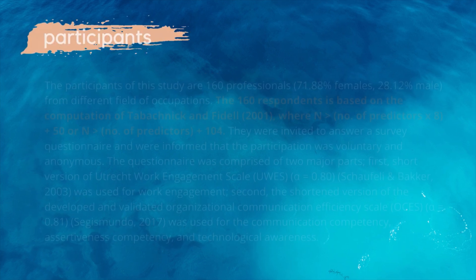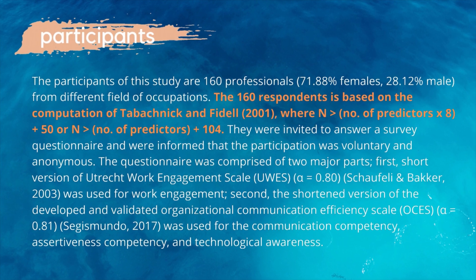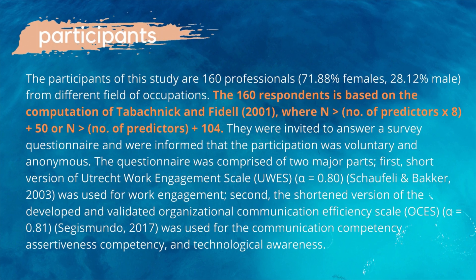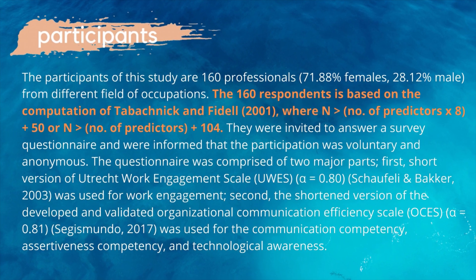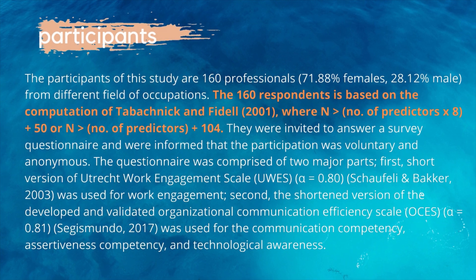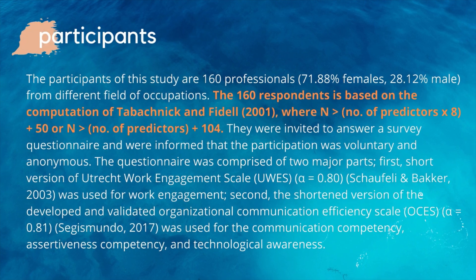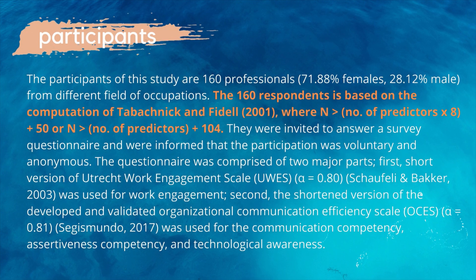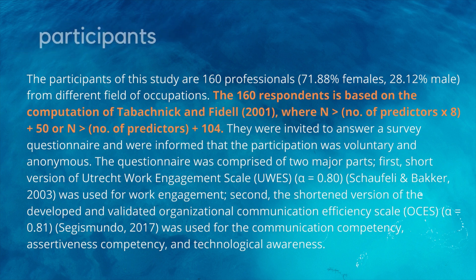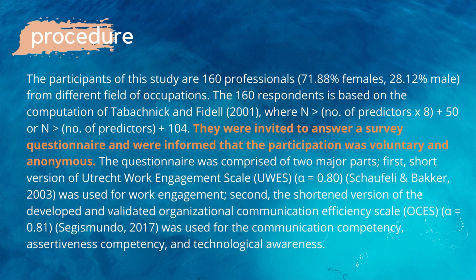You can then explain the basis for the number of respondents. For example, the 160 respondents is based on the computation of Tabachnick and Fidell (2001), where n is greater than the number of predictors times 8 plus 50, or n is greater than the number of predictors plus 104. The second part is the explanation of the procedure of the research methodology.